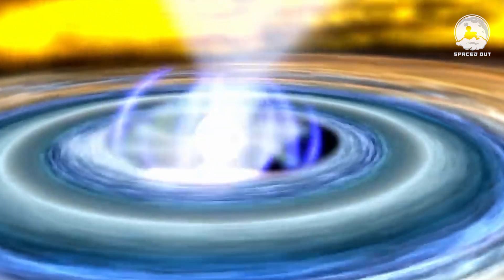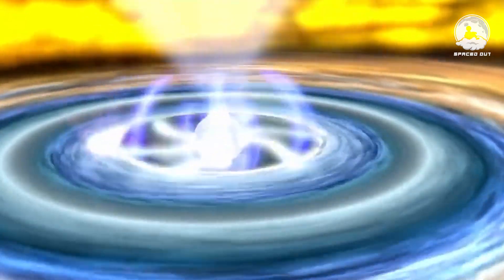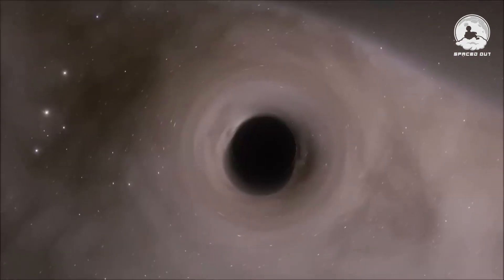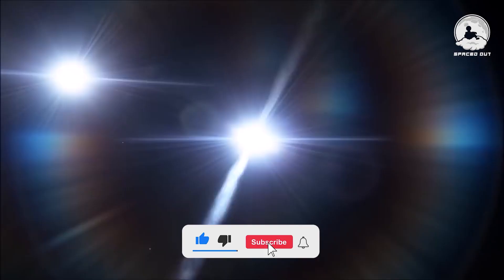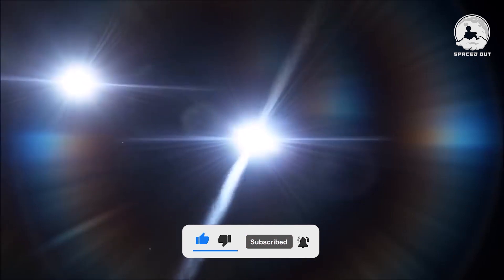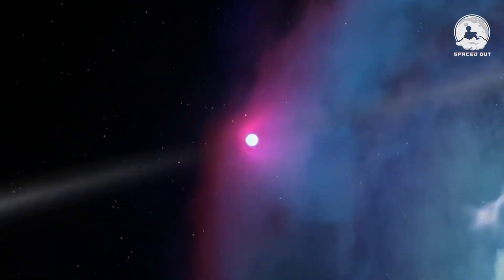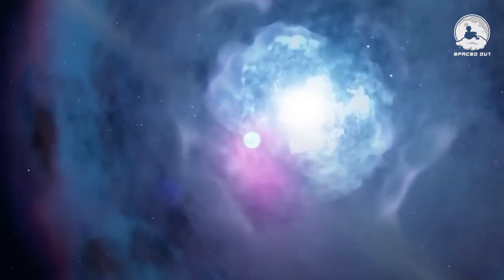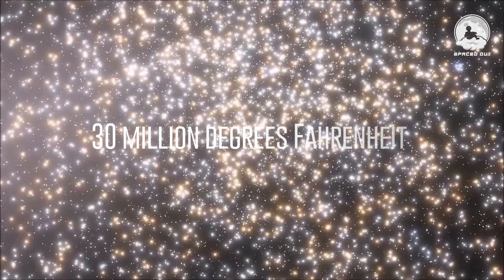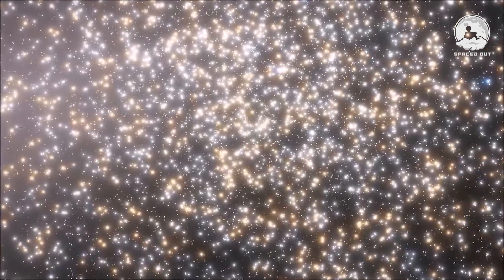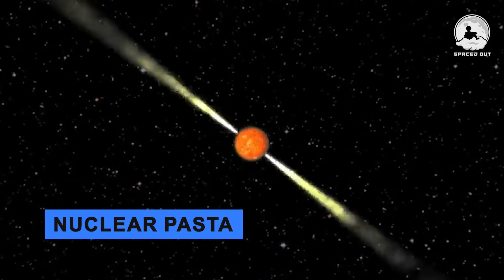But what would happen if the star was even denser? Looking at a neutron star from the outside reveals an unbelievably extreme celestial entity. Its gravitational force is second only to that of black holes, and if it were even denser, it would transition into one. Light itself is bent around the neutron star, allowing observers to see not only its front, but also portions of the back. The surface of a neutron star is a searing 30 million degrees Fahrenheit, an astonishing temperature compared to the relatively modest 10,000 degrees of our Sun.